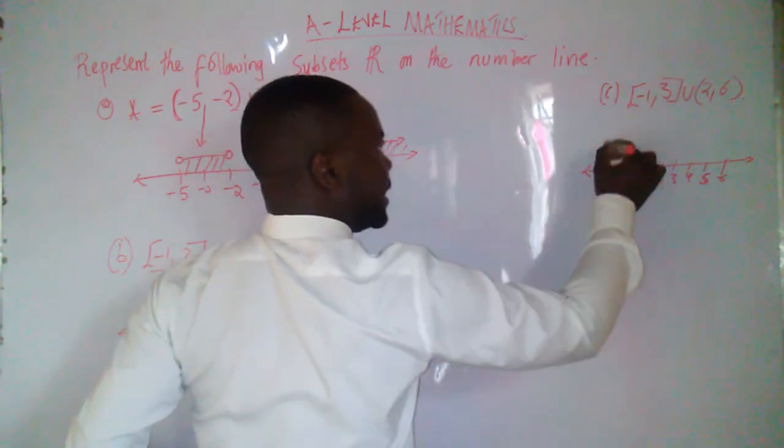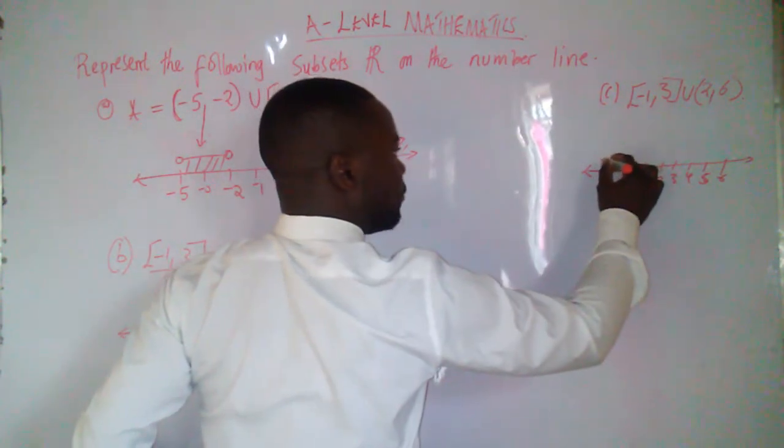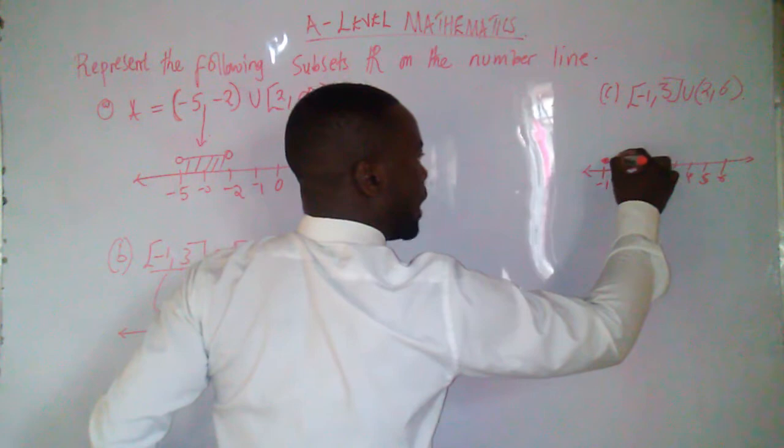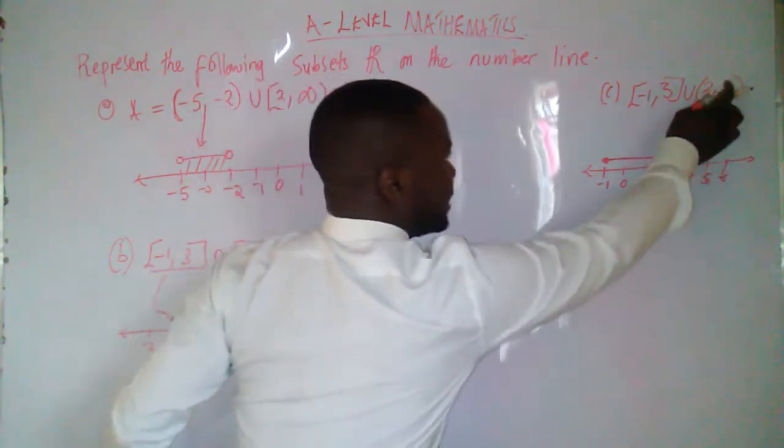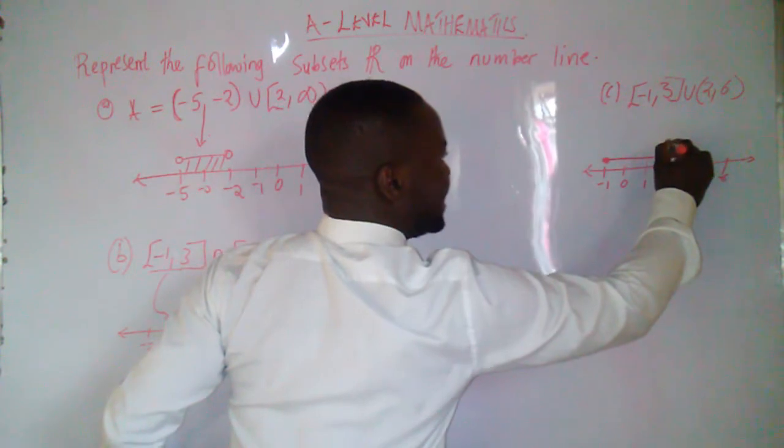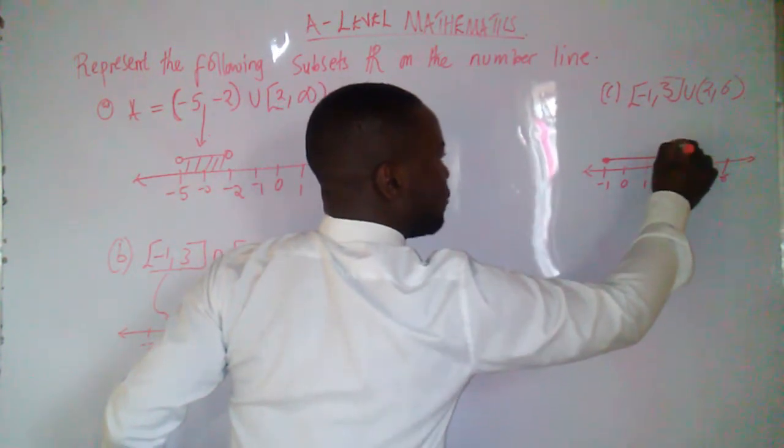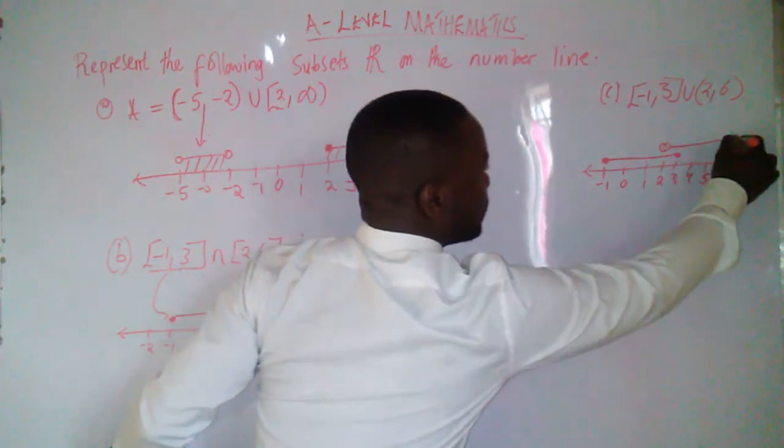Of which this part here, it's the closed interval of negative 1 to 3. And then this part here, it's the open interval, open interval of 2 to 6.